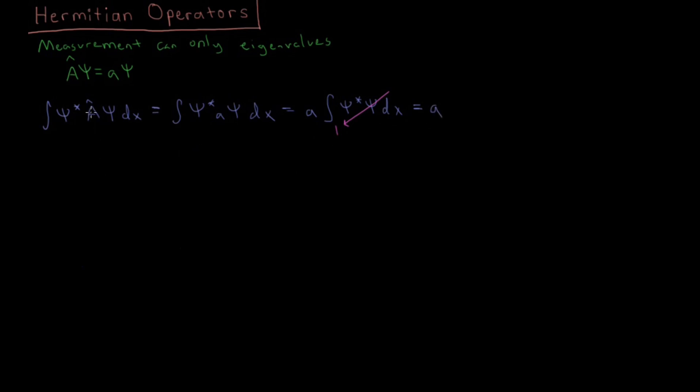And then this result here just gives us the constant A back. So for the expectation value of A, if we are in some eigenfunction of A, psi, we will get the eigenvalue for that eigenfunction back if we do some measurement.